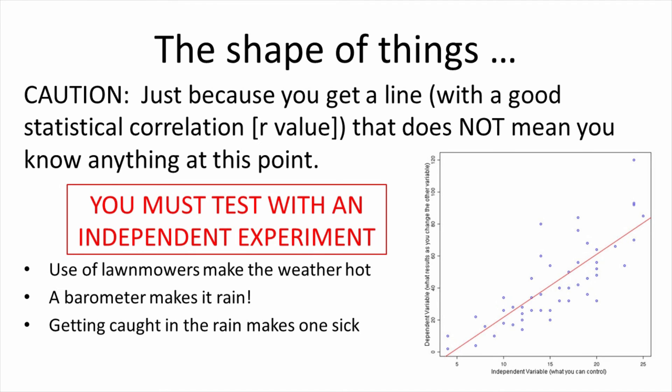Thus, if you are working with a data scientist and they claim a correlation is proof of something, remember they are wrong. One must then run an experiment where you actually manipulate the thing you think is controlling the output and see if you are actually controlling the output. Only then will you really know what is happening.